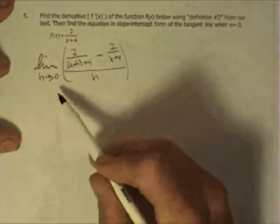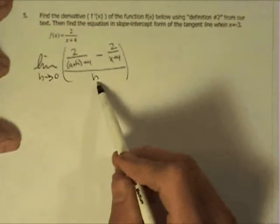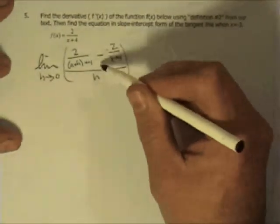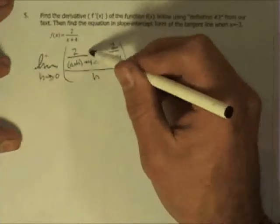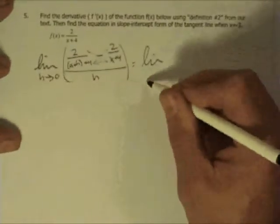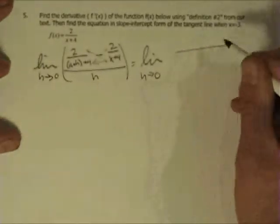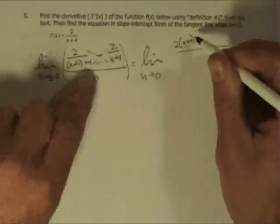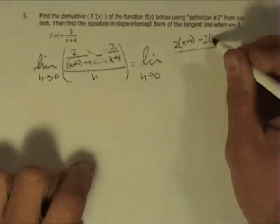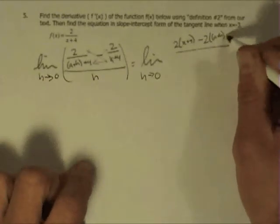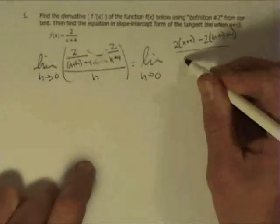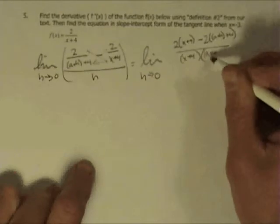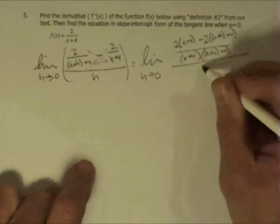So, I want to evaluate this limit, and I can't just plug in 0 because I've got 0. So, I will clean it up by doing the math at the top. I'm just going to multiply across and find a common denominator, multiply back, and multiply up there. And so, that will equal the limit as h approaches 0 of, and then the numerator here is 2 times x plus 4 minus 2 times a plus h plus 4. And then that's all over the common denominator, x plus 4, and a plus h plus 4, and then that's all over h.